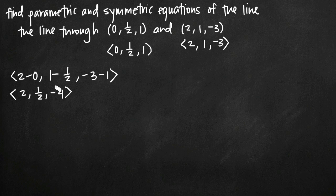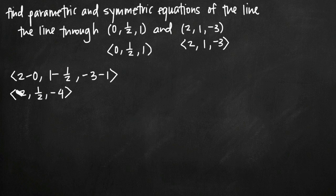This is a vector which is parallel to our line because we basically found a vector that goes from one point to the other. The original vectors go from the origin out to each coordinate point, but this new vector moves from one coordinate point to the other, which means it's parallel to the line passing through these two points. Because this vector represents the direction of the line, we also call these values the direction numbers of our line.